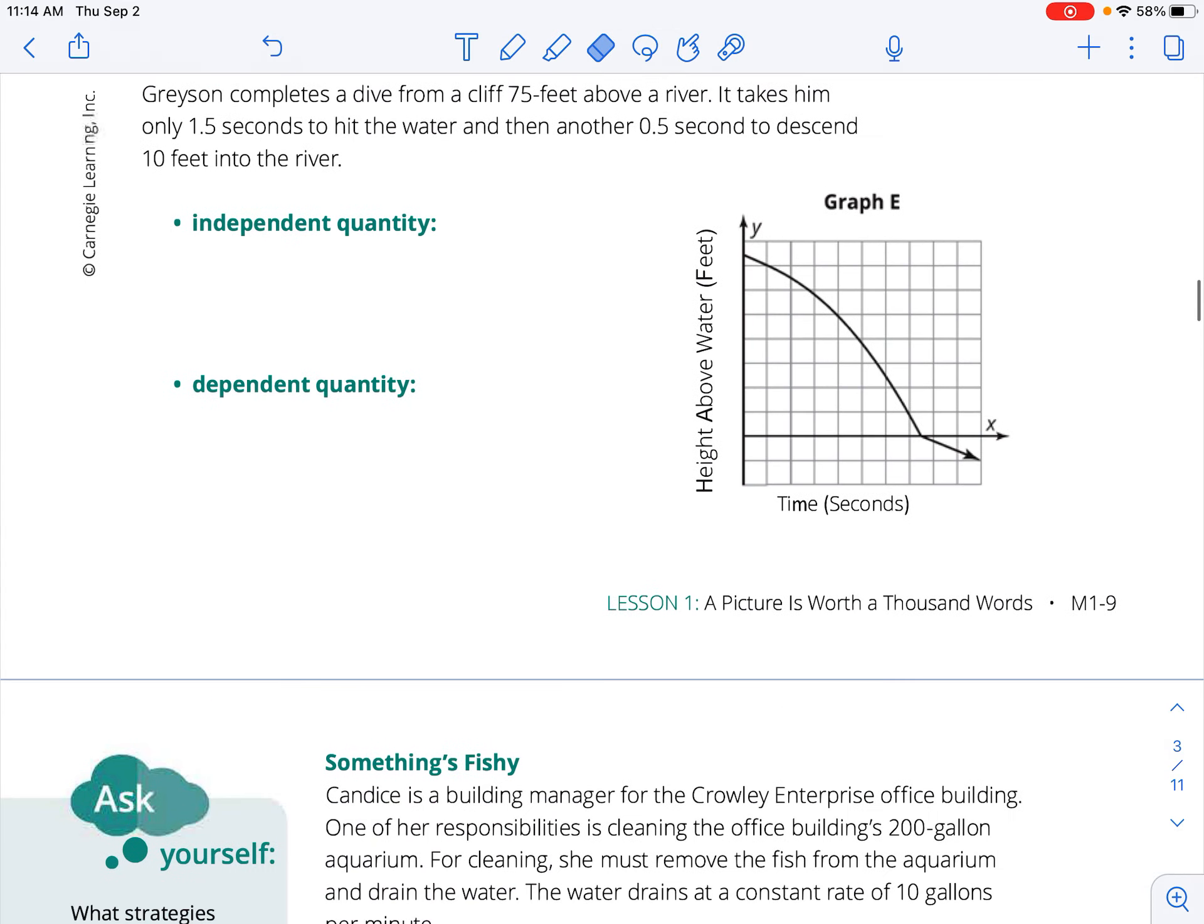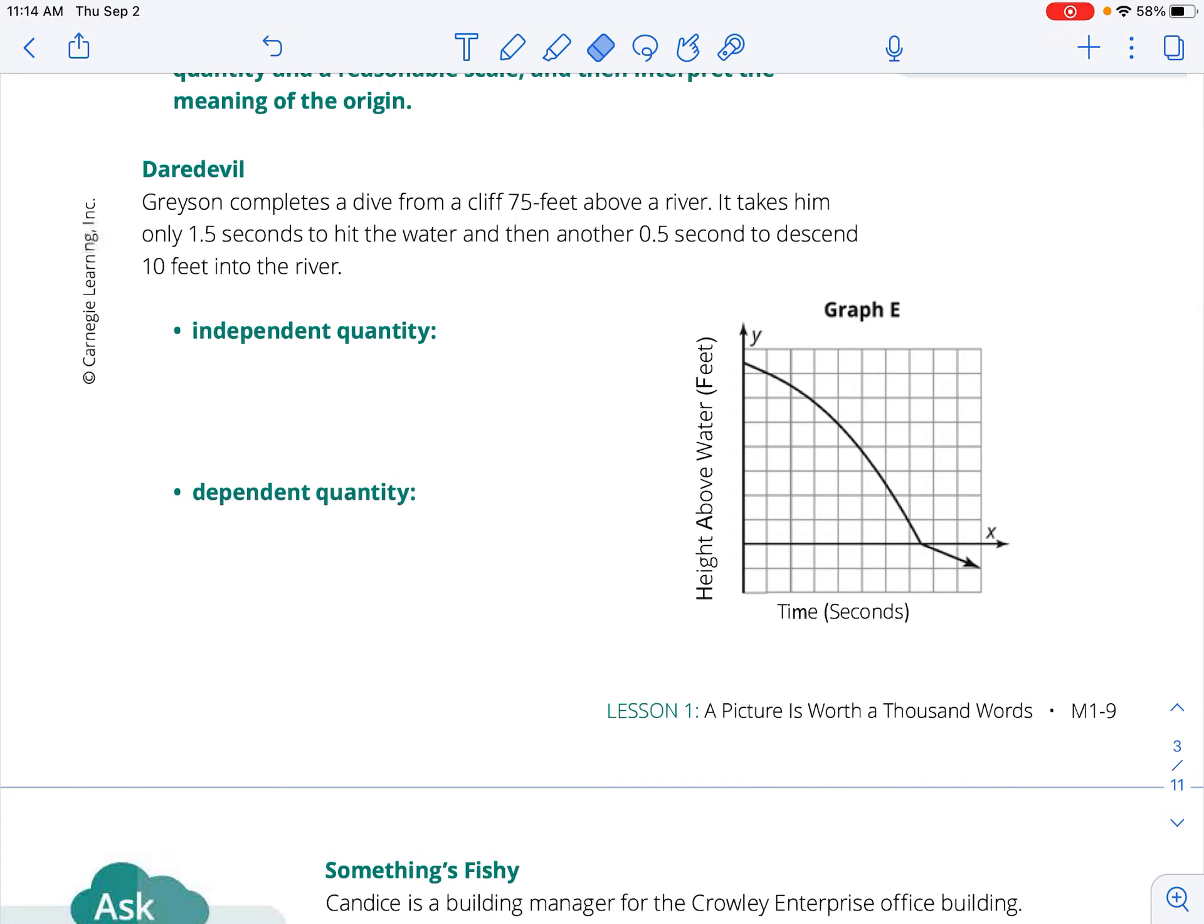Now, I've already taped these in here, so let's take a look at the daredevil for the first one. Grayson here completes a dive from a cliff 75 feet above the water. It takes him only one and a half seconds to hit the water, and then another half a second to descend 10 feet into the water. So he starts high up and then goes down into the water. The independent quantity is going to be my time in seconds, and the dependent quantity is going to be your y-axis, which is your height above the water. So when time starts, he is way up here at 75 feet, and as he jumps off the cliff and time is going, he's falling down, hits the water, and then he goes underneath the water right there as they show. So that's what we're going to do is match up these scenarios, identify the independent and dependent, and then match up the graph.